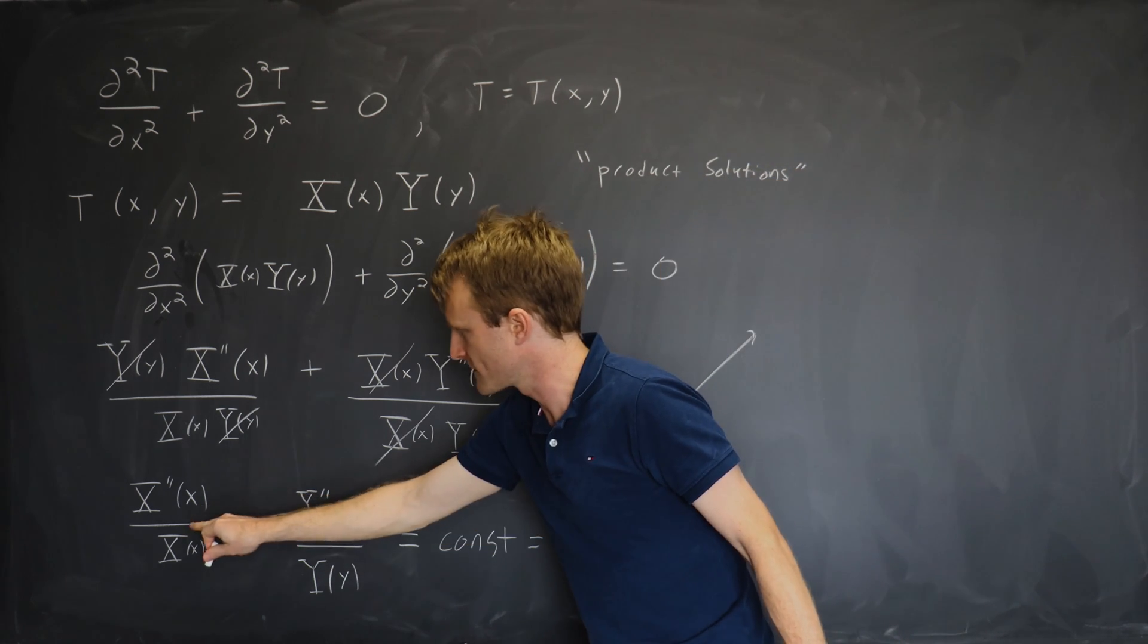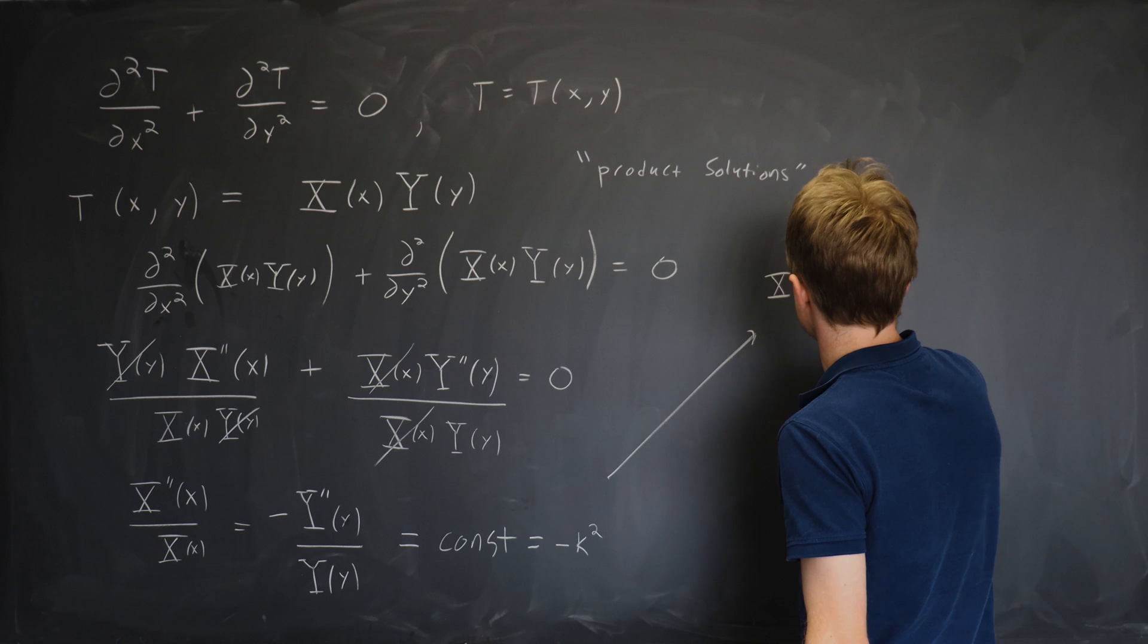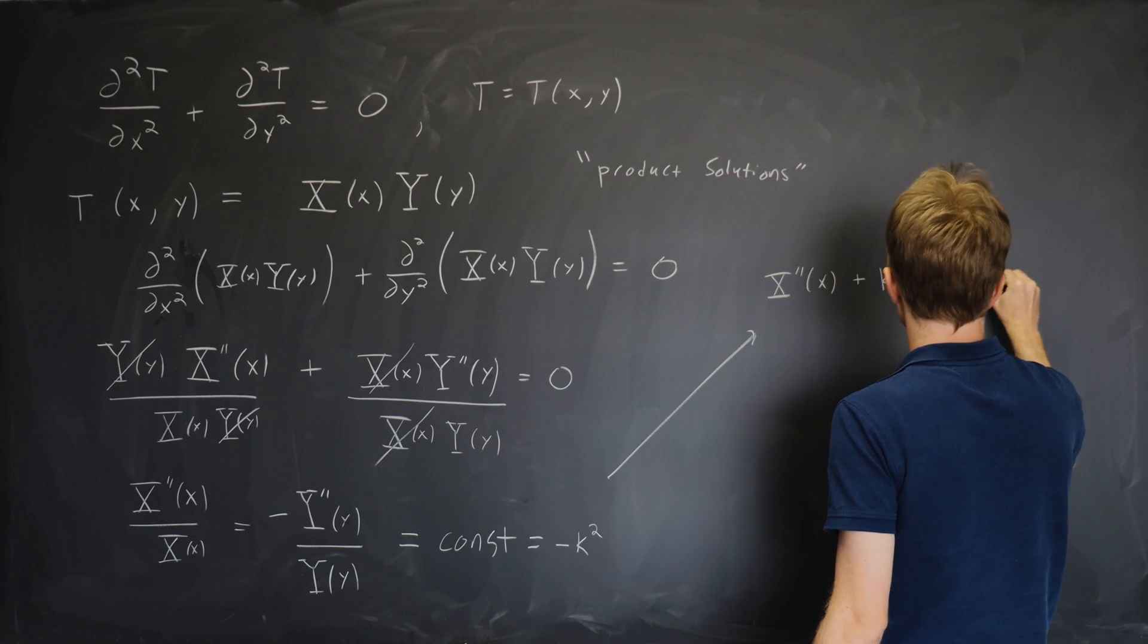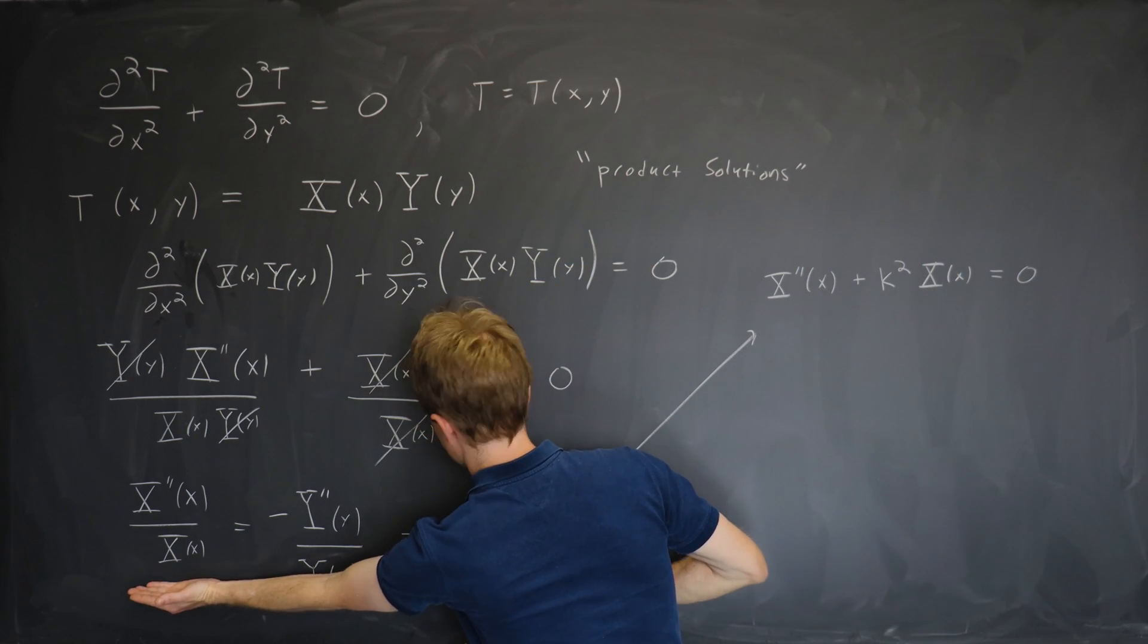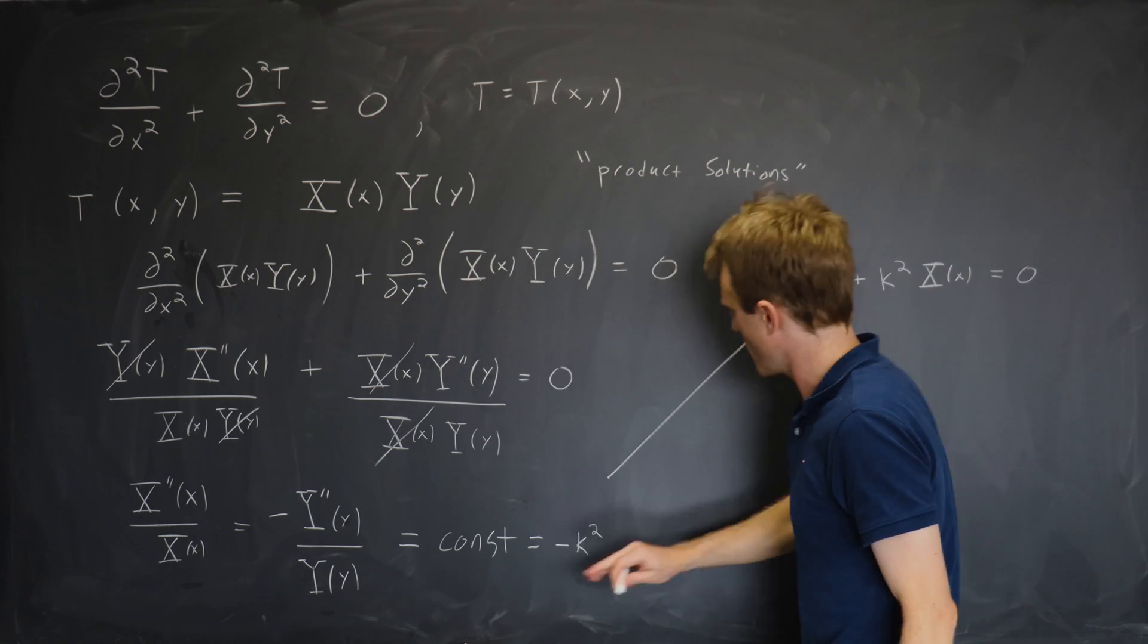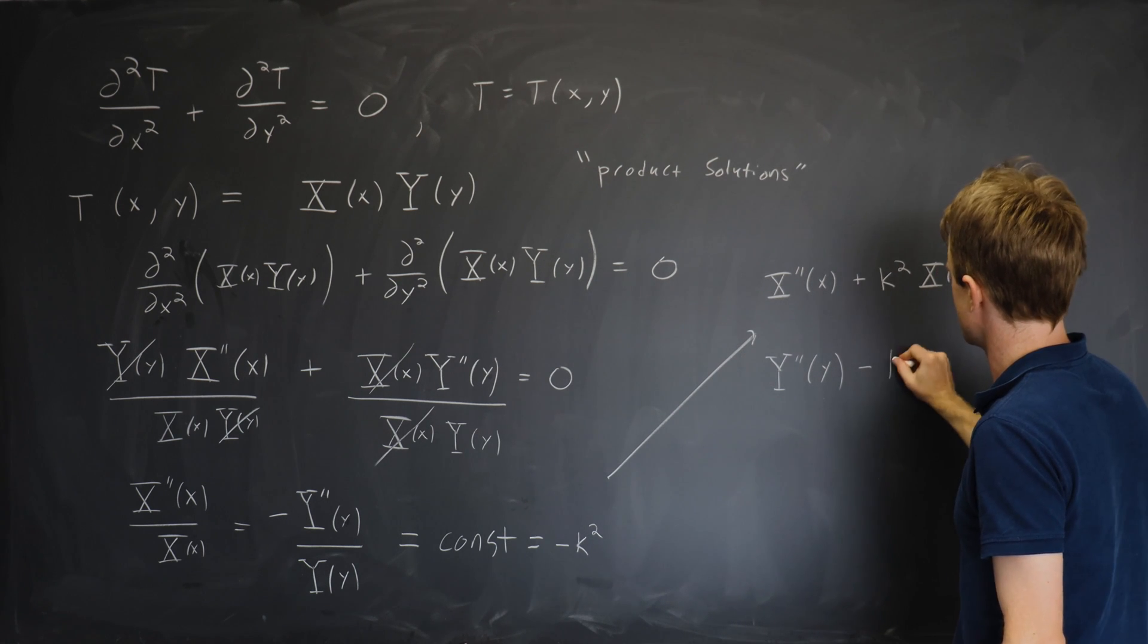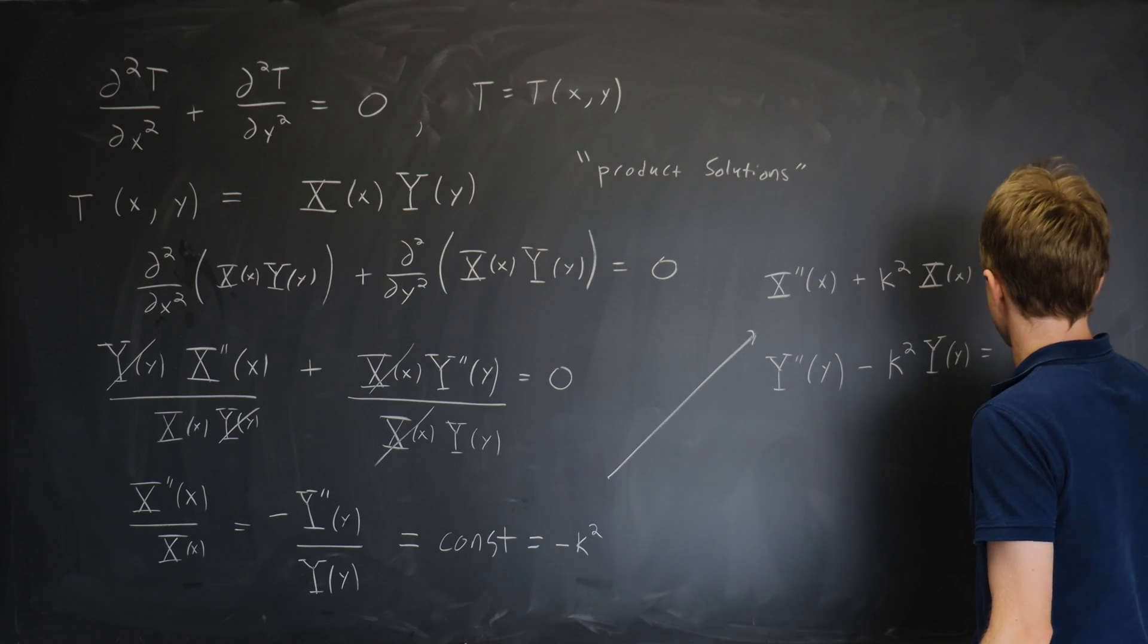The first one says x double prime of x over capital X of x equals minus k squared. Or multiplying through x double prime of x plus k squared x of x equals 0. That was the equation thing on the far left equals thing on the far right. But we also have the equation that the stuff involving y equals thing on the far right. And that equation is y double prime of y minus k squared y of y equals 0.